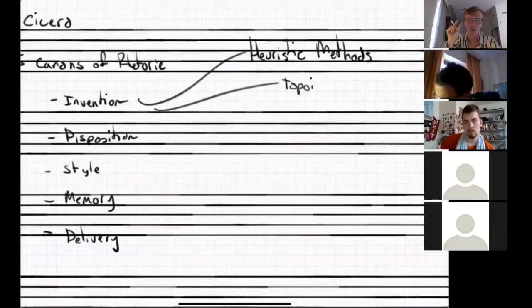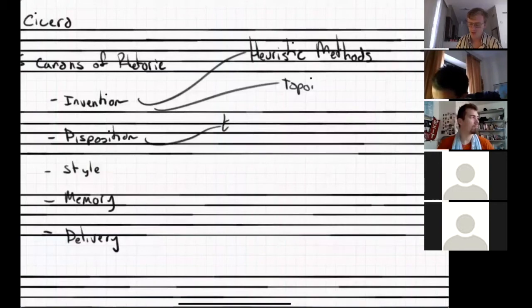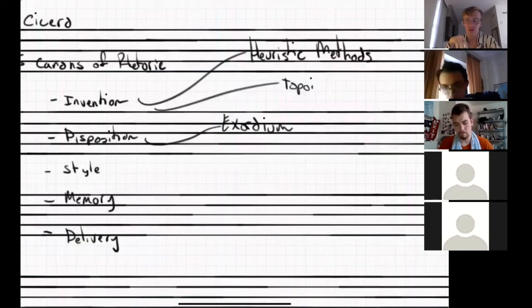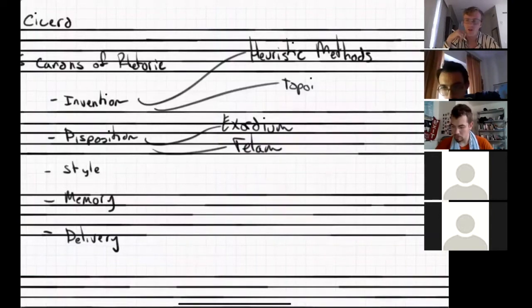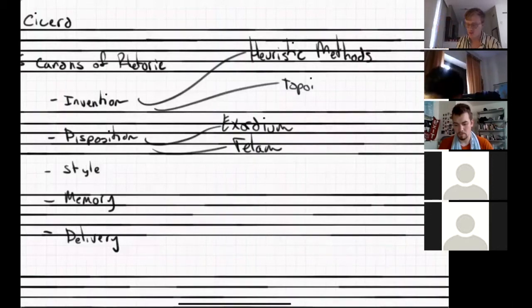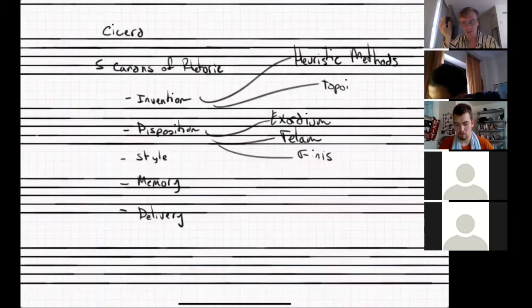We usually begin with the exordium, which is the presentation of ideas. Then we have the telom — 'telom' means spider web — which is the threading of ideas, the body of the work. Then we have the peroration, which is the conclusion. That's essentially disposition as far as we're concerned in music. Style is the way in which you deliver things with eloquence — appropriate for the room. You would not say 'howdy, your honor' in a court proceeding, and you would not speak very formally to a friend.